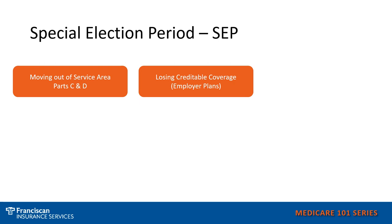The next special election period is losing creditable coverage. In some situations, people will decide to stay on their employer coverage even though they are eligible for Medicare Parts A and B. In this case, you would need to have creditable coverage through your employer plan, otherwise you would receive a penalty. But if you do have creditable coverage and choose to stay on that employer plan until maybe age 67 or 68, then leave the employer plan due to retirement or another reason, you would qualify for a special election period for your Part C and D Advantage plans and, depending on your situation, your Medicare Supplements as well.